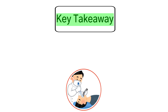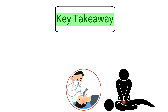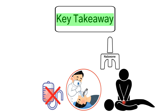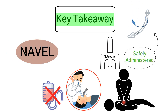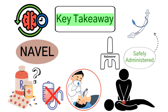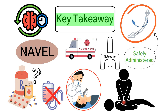The key takeaway for this question is: in a patient who is intubated and undergoing CPR with no IV access, medications such as Narcan can be safely administered through the endotracheal tube. Understanding the NAVAL mnemonic is essential for quickly recalling which drugs are appropriate for endotracheal administration in emergency situations.